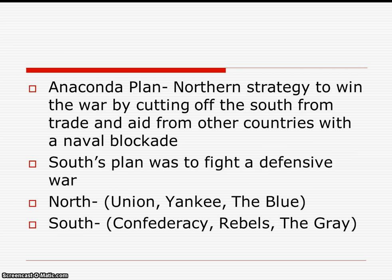The Anaconda Plan is your northern strategy for the Civil War — they want to cut off the South from trade and aid from other countries with a naval blockade. The South really just plans to fight a defensive war, defending their right to exist as the Confederate States of America. The North has nicknames like the Union, Yankees, and the Blue. The South has nicknames like the Confederacy, Rebels, and the Gray.